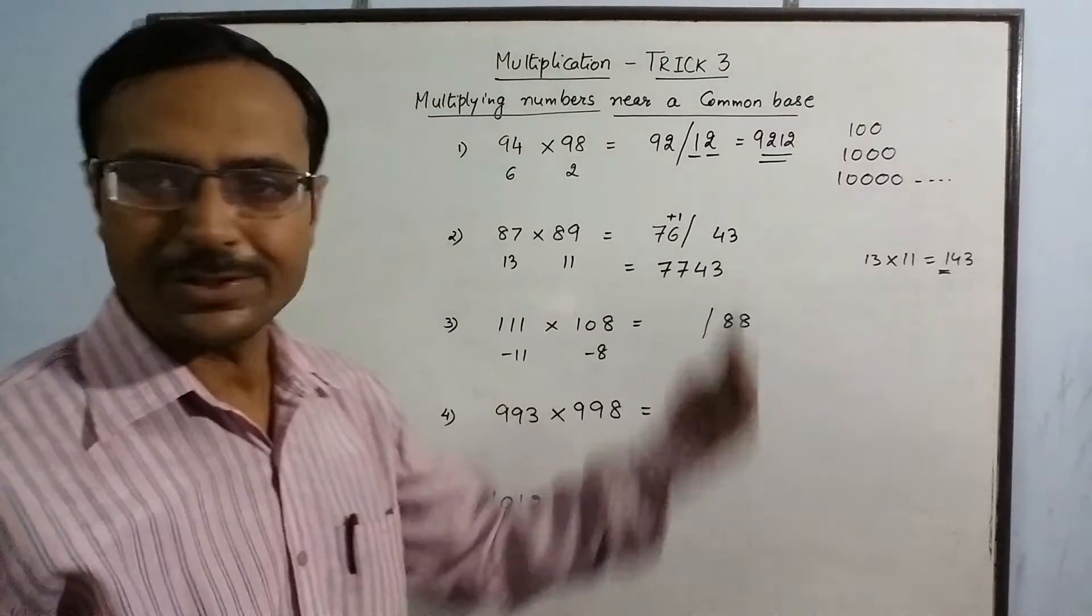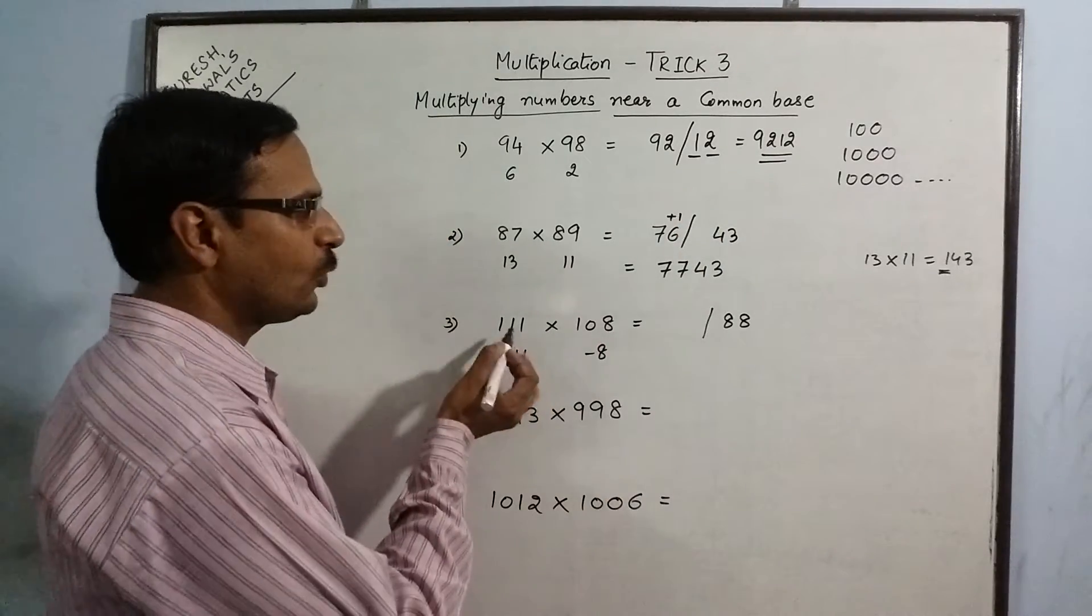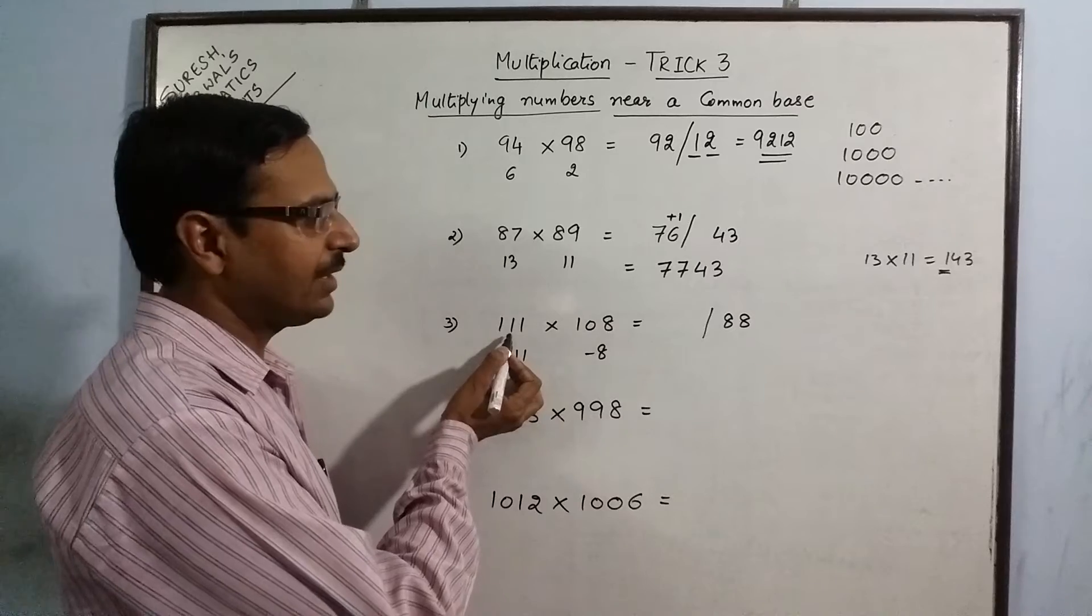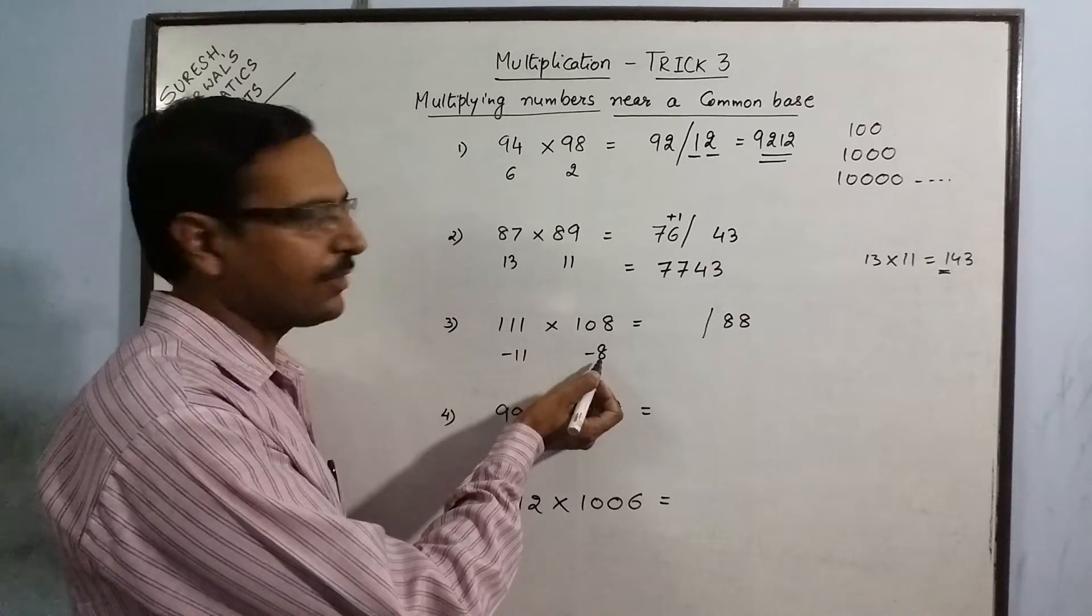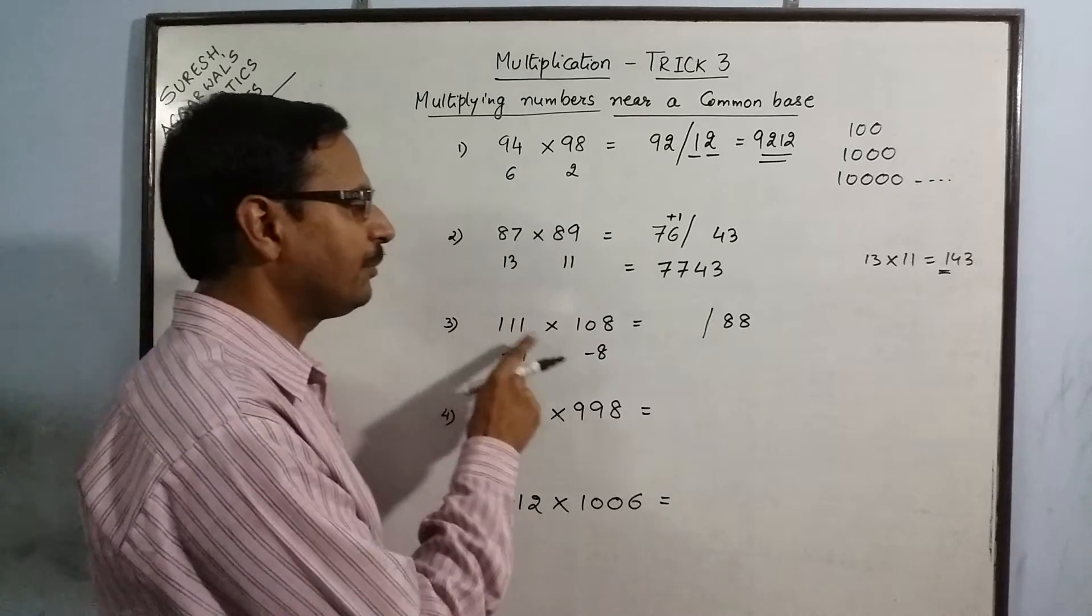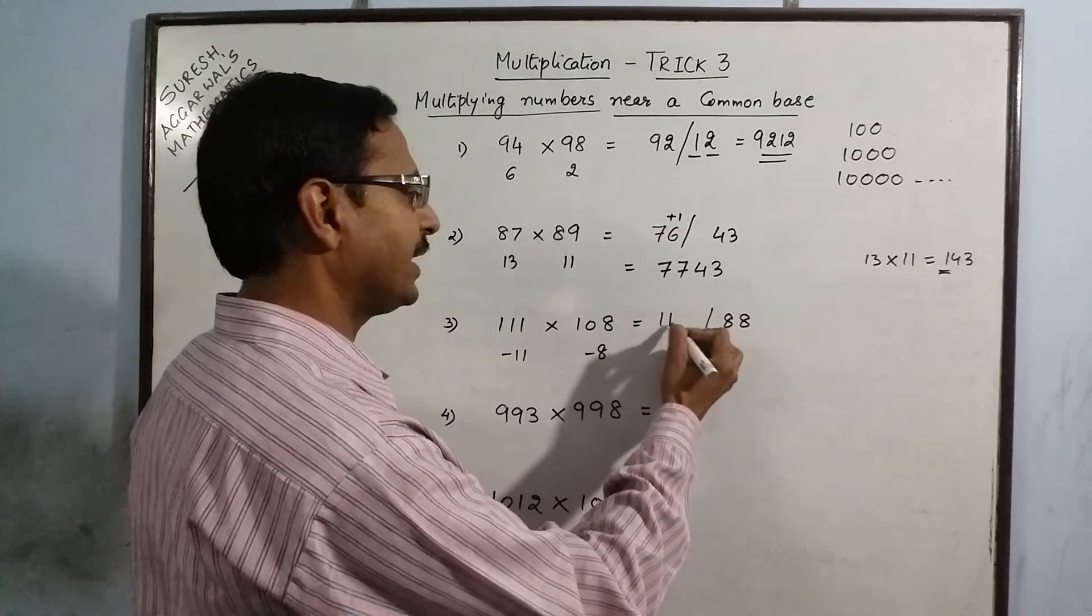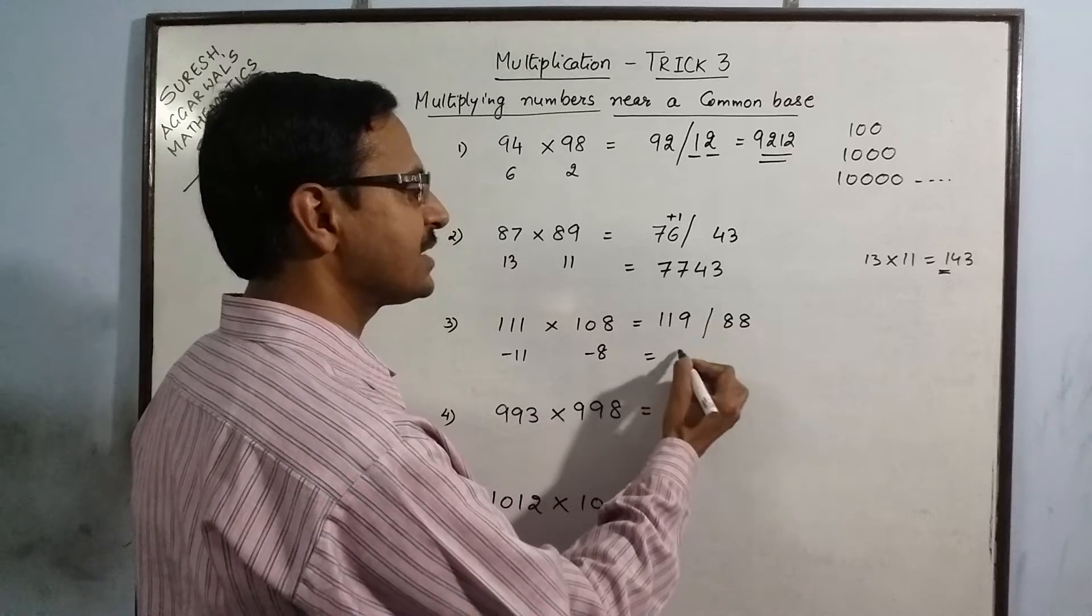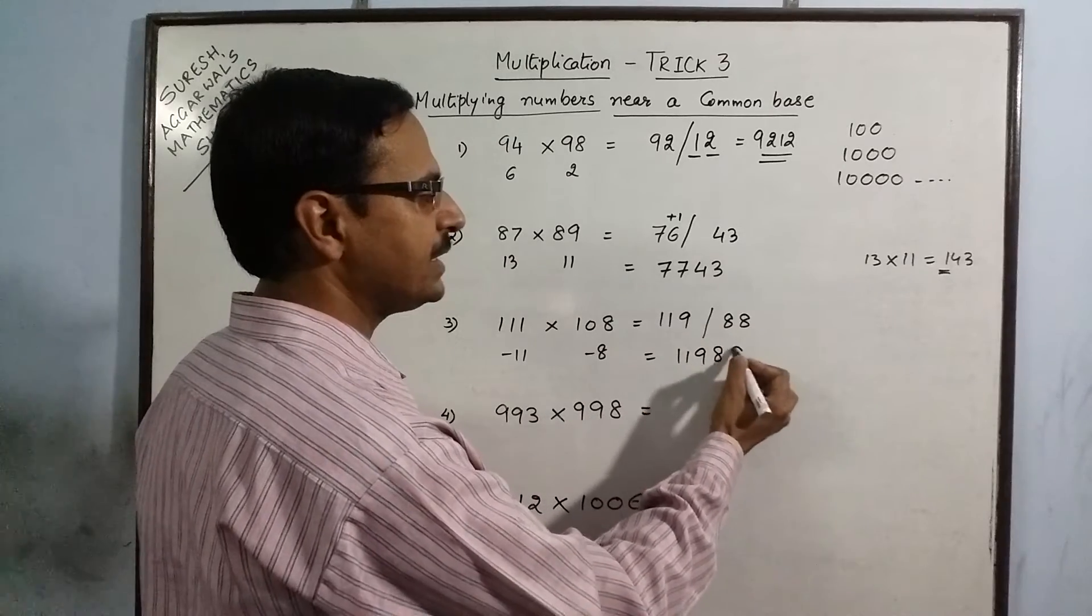Two digits, two zeros. And, when we subtract 111 and minus 8, then we ultimately add them. So, 111 minus minus 8 gives us 119. So, the final answer is 11988.